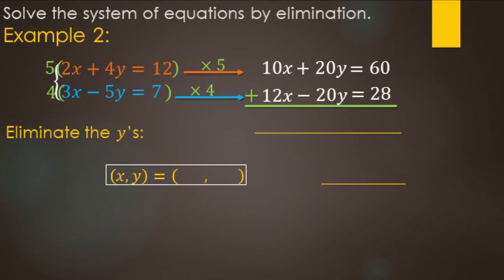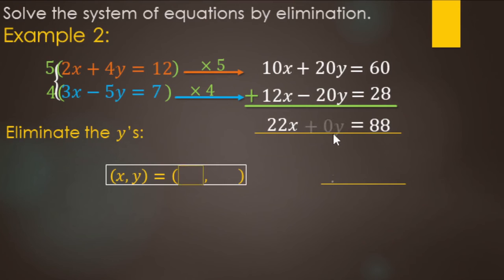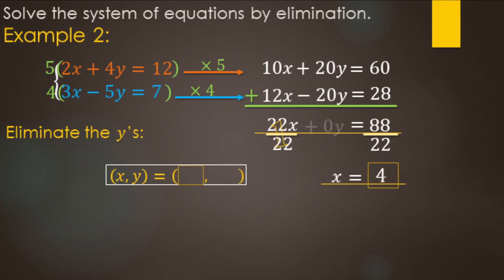Adding straight down using the equations set up to eliminate y's: 10x plus 12x makes 22x, 20y minus 20y gives zero y's, and 60 plus 28 makes 88. The y's were eliminated. Divide both sides by 22: x equals 88 divided by 22, which is 4. The x value is 4.